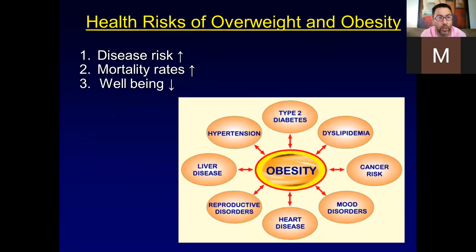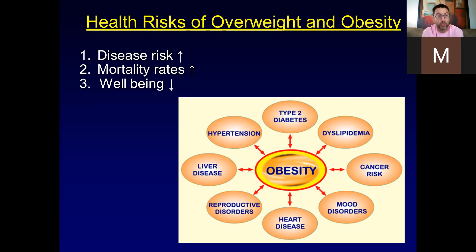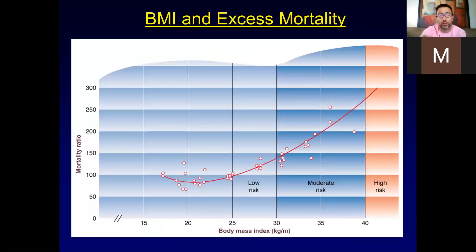The health risks of overweight and obesity include type 2 diabetes, high blood pressure, risk for certain cancers especially breast and ovarian cancers, mood disorders including anxiety and depression, every kind of cardiovascular disease, and fatty liver disease. Fatty liver disease is increasingly prevalent in children and is related to being overweight. In general, if you are overweight or obese, you are at higher risk of different chronic diseases, higher mortality rates, and decreased well-being.